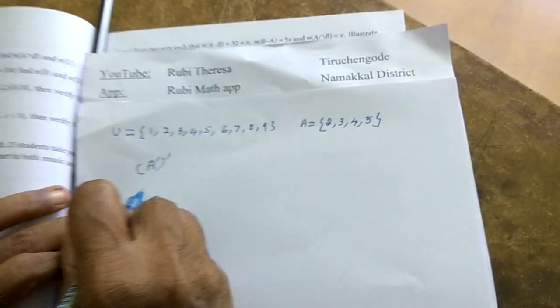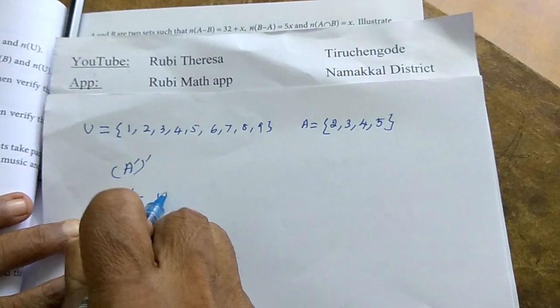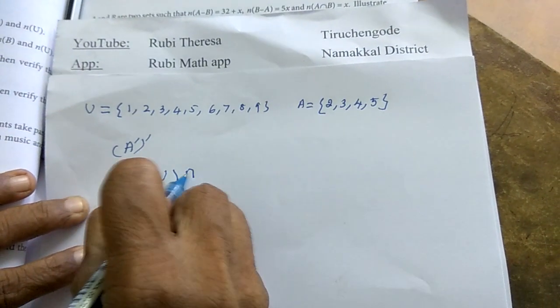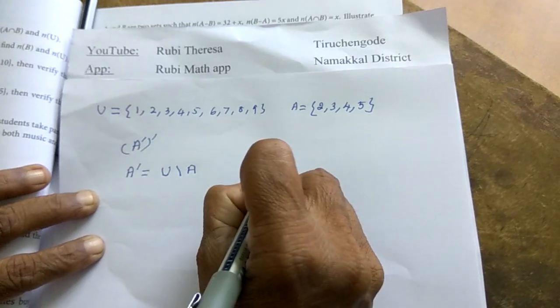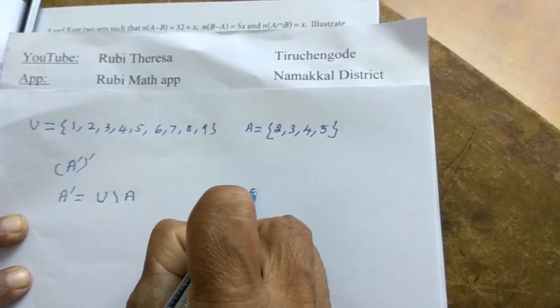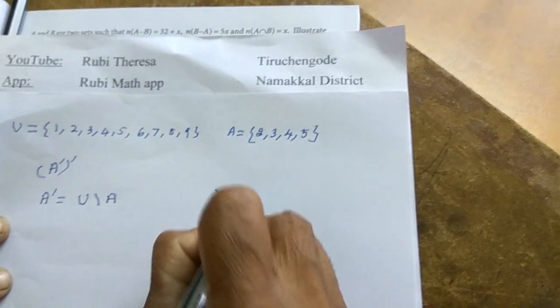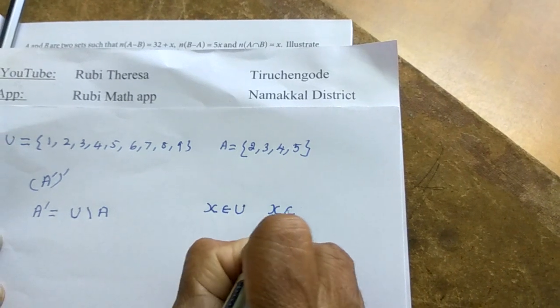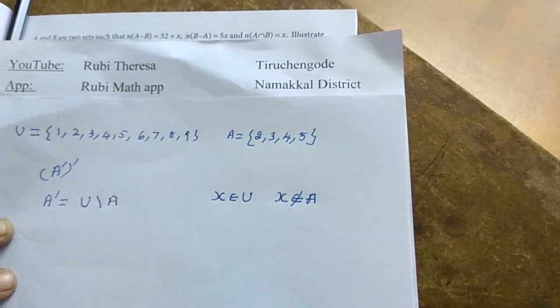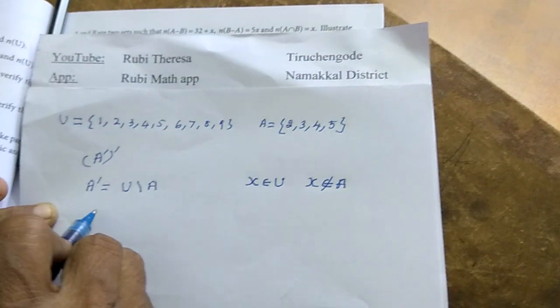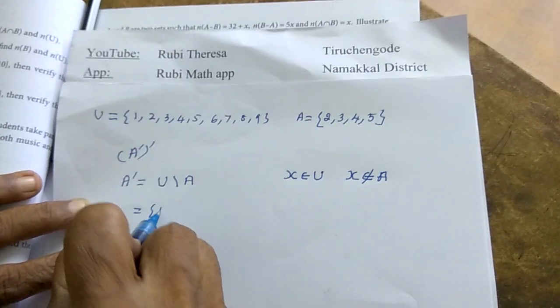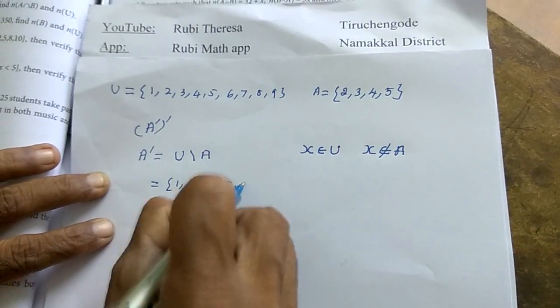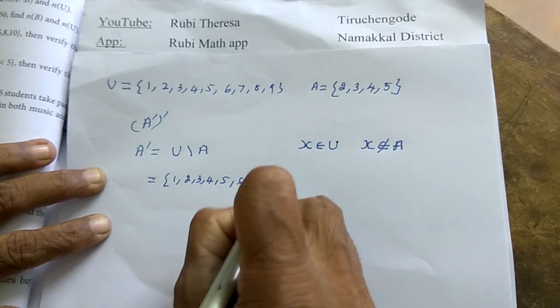A dash equal to what? U difference A. That means what? X is an element of U but it is not an element of A. Is it okay? So first you write the universal set: 1, 2, 3, 4, 5, 6, 7, 8, 9.